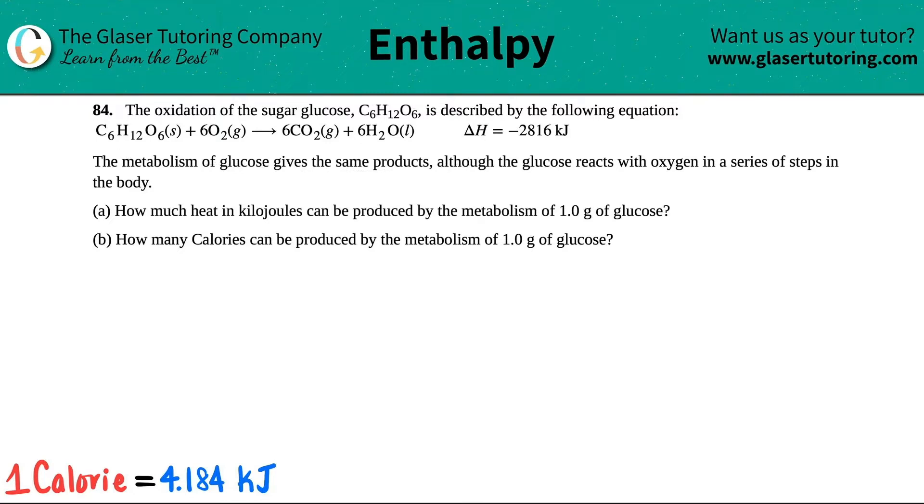Looks like it's a combustion, right? C6H12O6 solid plus 6O2 gas yields 6CO2 gas plus 6H2O liquid, and there's a delta H for this. So when this process happens, we will release 2,816 kilojoules.